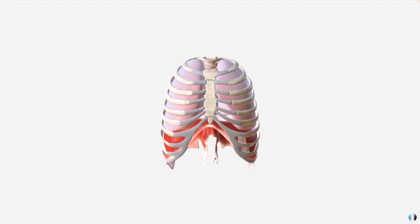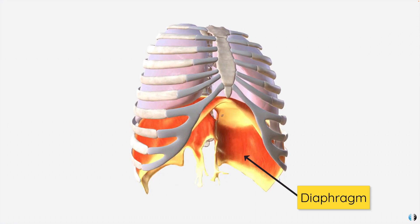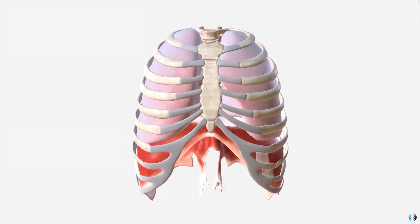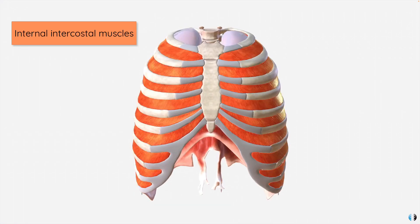If we look at the anatomy of the thorax, we need to understand some important muscular structures. First, the diaphragm, which we can see here at the lower part of the thoracic cage, as well as the internal and external intercostal muscles which attach to the ribs.